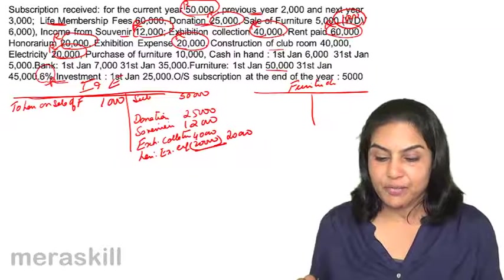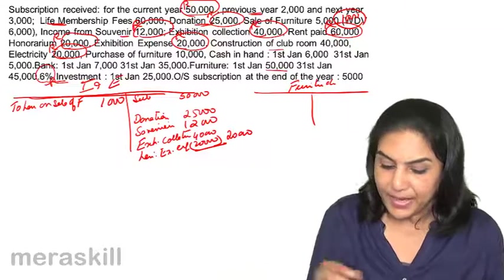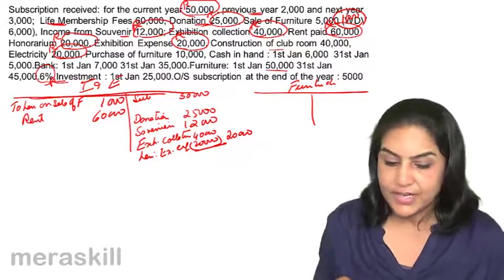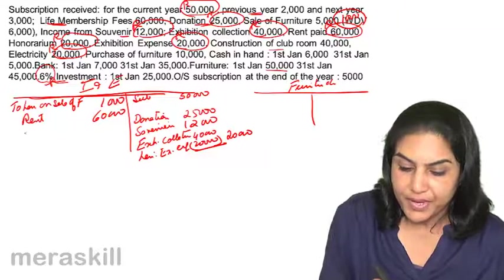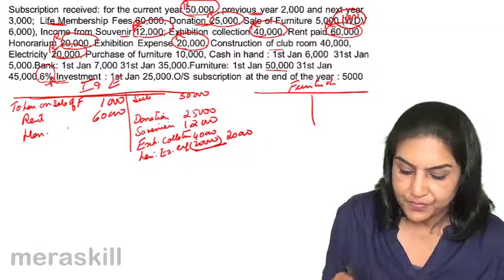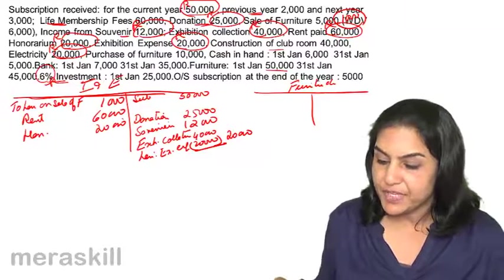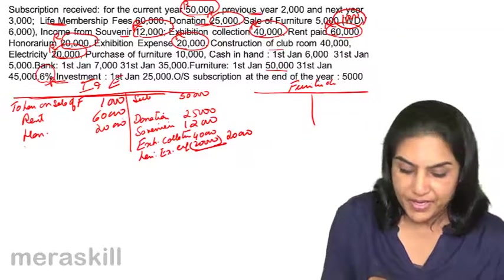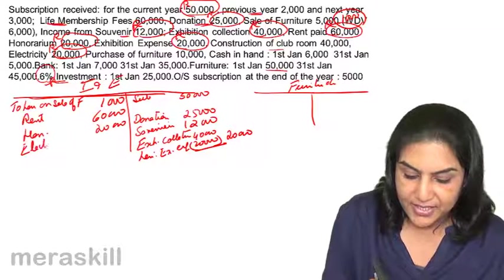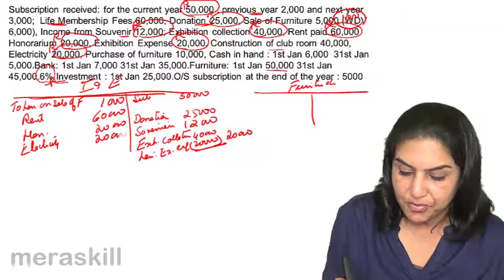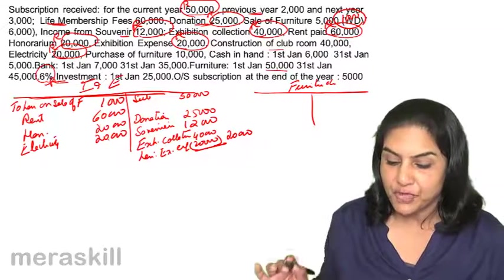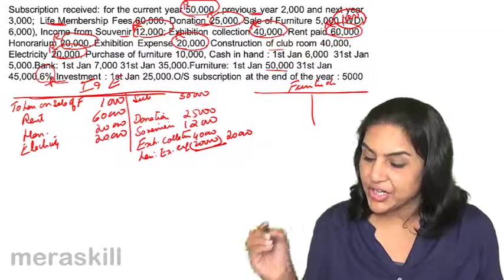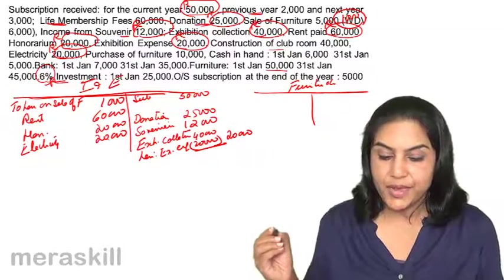Construction of club room — no, we've missed something. Rent paid is an expense: 60,000. Honorarium is paid: 20,000. Exhibition expense we considered. Construction of club room is capital, not an income and expenditure item. Electricity is an item of expense in the income and expenditure account. Purchase of furniture — no, but we will prepare a furniture account. Cash in hand and cash at bank are not considered.